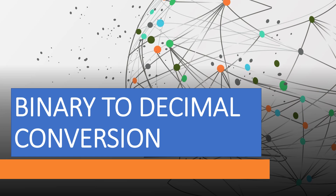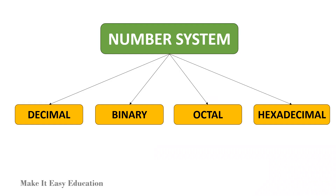Binary to decimal conversion. The various types of number system are decimal, binary, octal and hexadecimal. Today let's learn how to convert a binary number to a decimal number.